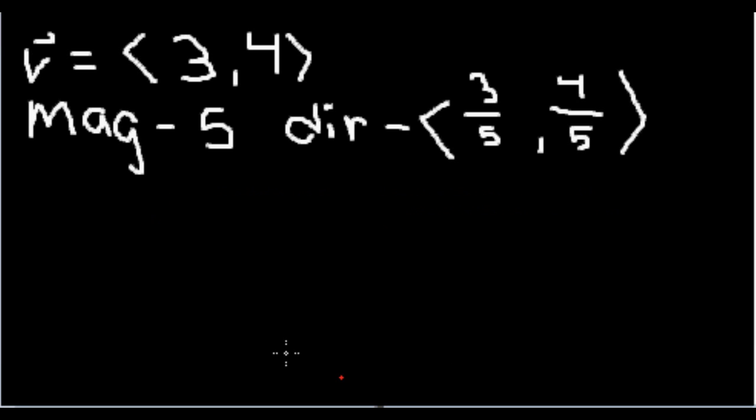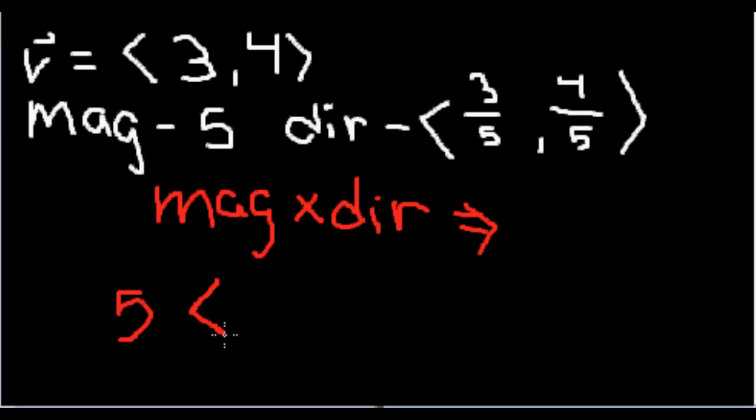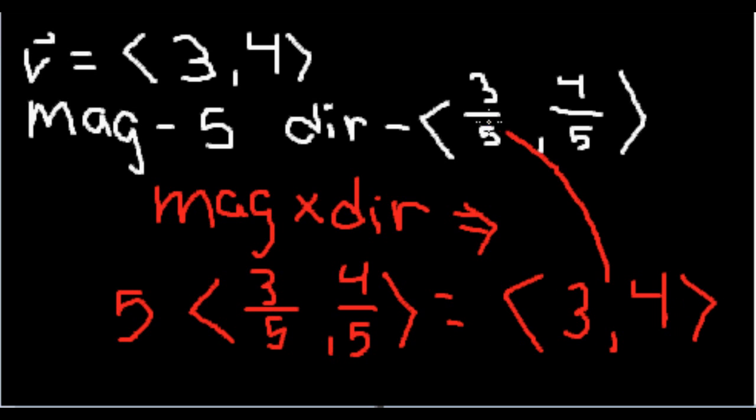Any vector may be represented as a scalar magnitude multiplied by a direction vector, which has a length of 1. For our example, we multiply our direction vector (3/5, 4/5) by our magnitude of 5. Now, we can clearly see that we have arrived back at our original vector.